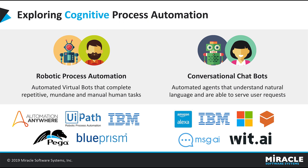Then we have conversational chatbots, which understand natural language. We use coding to communicate with bots and to serve their requests. Automation Anywhere, UiPath, and IBM are all tools of robotic process automation. Amazon Alexa and IBM are tools of conversational chatbots, which require bots to be developed.